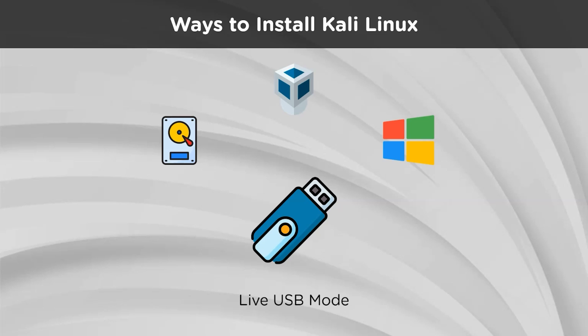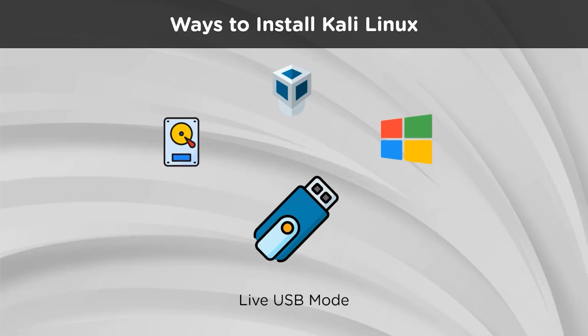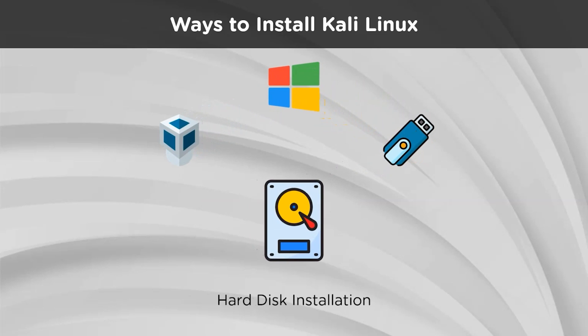But what if the user wants to store data permanently in the installed OS? The best and most reliable way to ensure this is the full-fledged hard disk installation. This will ensure the complete usage of the system's hardware capabilities and will take into account updates and configurations being made to the OS. This method is supposed to override any pre-existing operating system installed on the computer, be it Windows or any other variant of Linux.